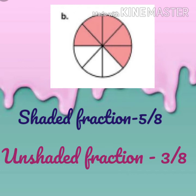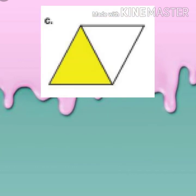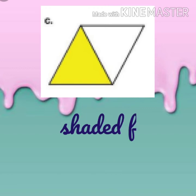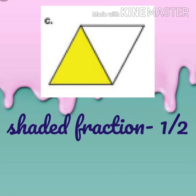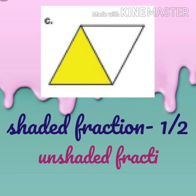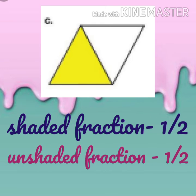We are having one more example with one more figure. This figure is also divided into two equal parts. So the shaded fraction will be one upon two, as well as the unshaded fraction will also be one upon two, because here one part is shaded and one part is unshaded, and the total parts are two.